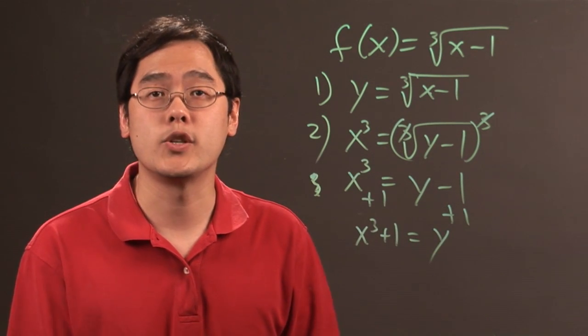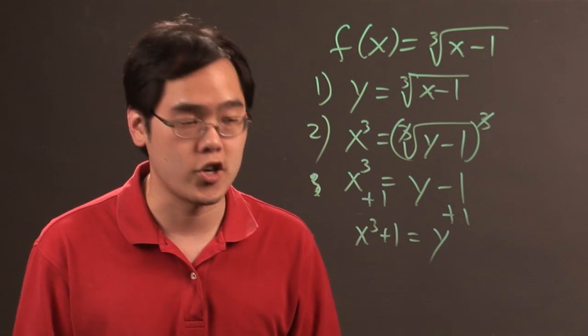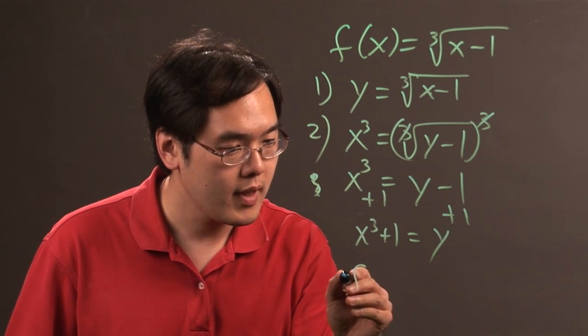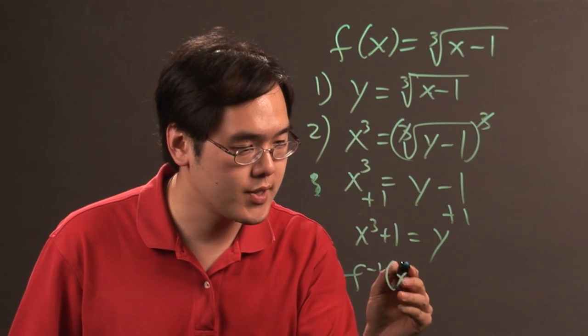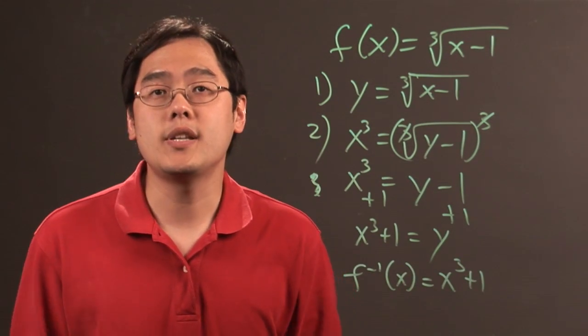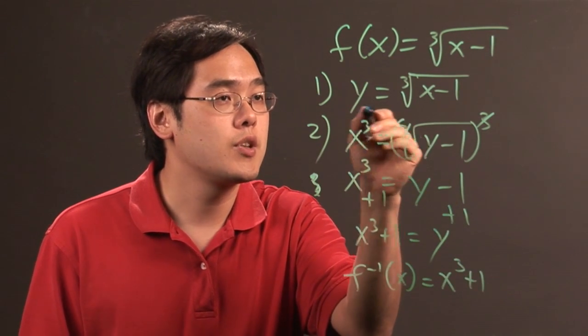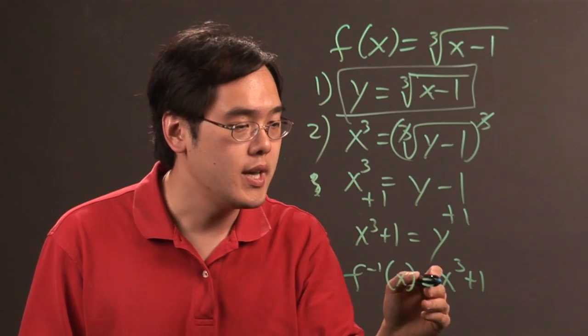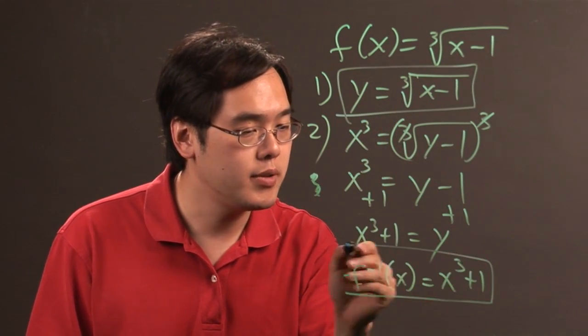Now that y is by itself, you want to replace y with the inverse function notation. In other words, f inverse of x equals x cubed plus 1. What that means is the inverse of the cube root of x minus 1 is x cubed plus 1.